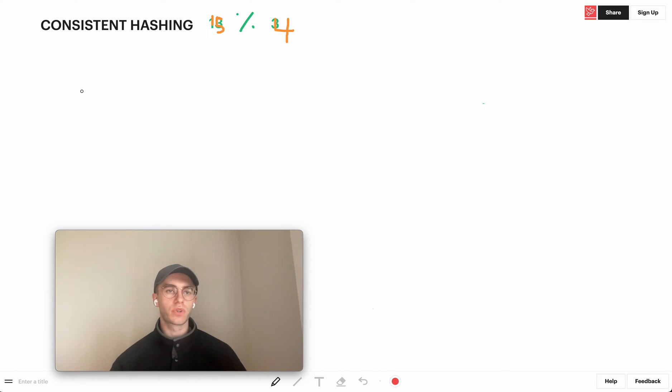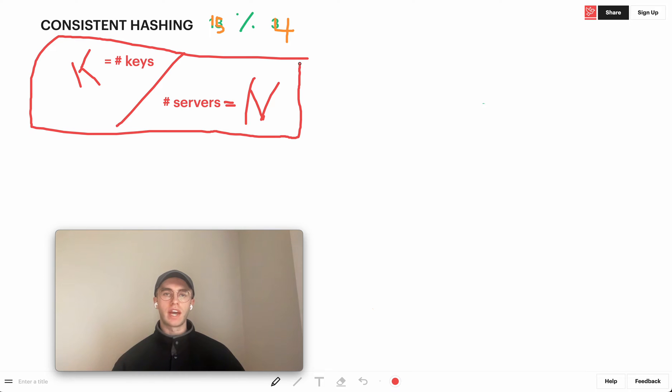What that will end up looking like is instead of us having to reshuffle all those routes, essentially it's just going to be k where k is basically the number of keys divided by the number of servers, which we could represent by n. So it's basically k divided by n, the number of keys divided by number of servers. That is the amount of shuffling that we're going to have to do.